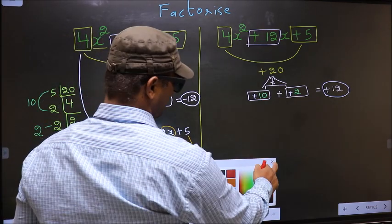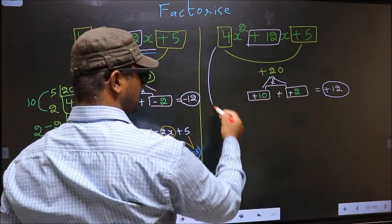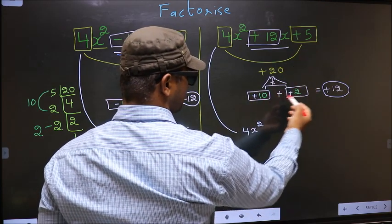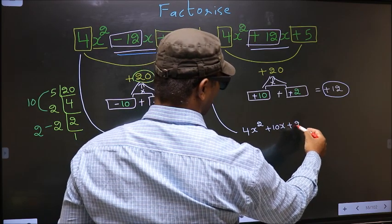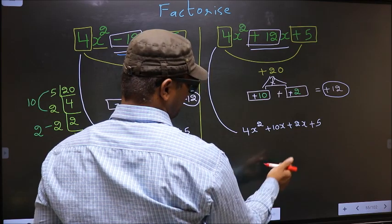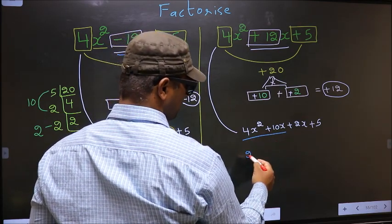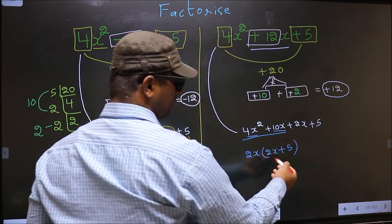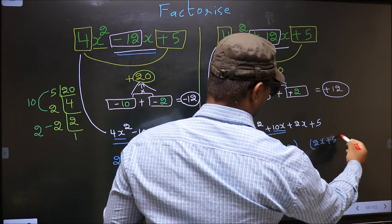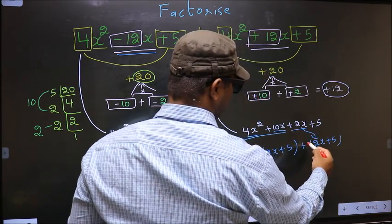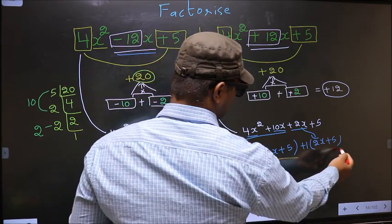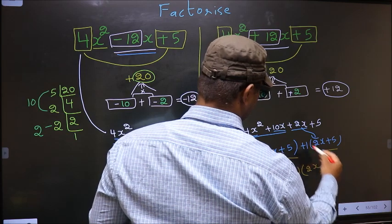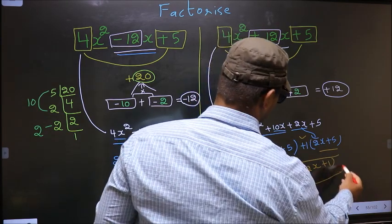Next, for the second expression: change this to 4x squared. In place of plus 12x, we write plus 10x plus 2x plus 5. From the first two terms, what can be taken out common is 2x. So here we get 2x, and taking 2x out from the next term, we get 5. Whatever we got here, here also we should get the same thing. From this, 2x has gone inside, so outside we get plus 1. Now you take 2x plus 5 as common. So here we have 2x and here we have plus 1. This is the answer: (2x + 5)(2x + 1).